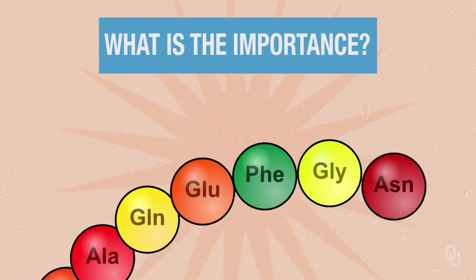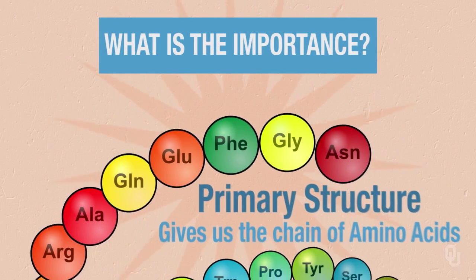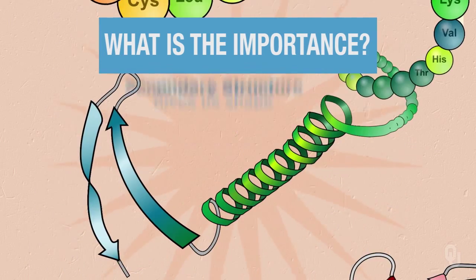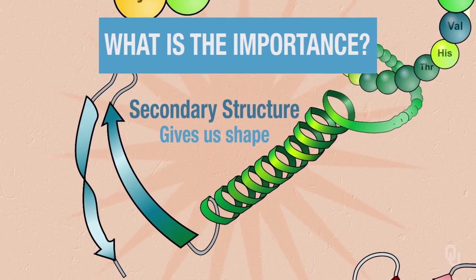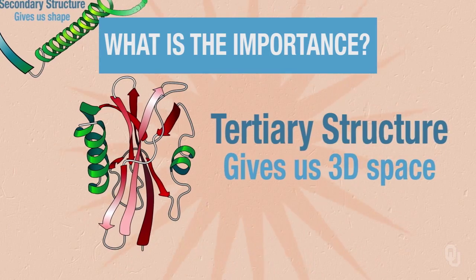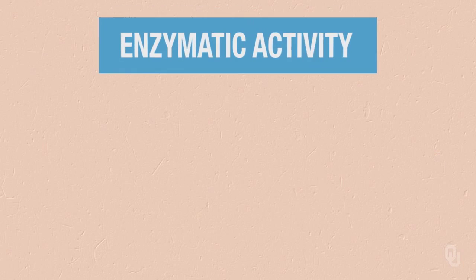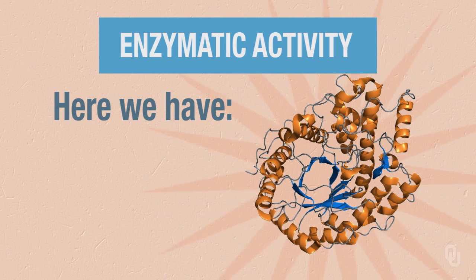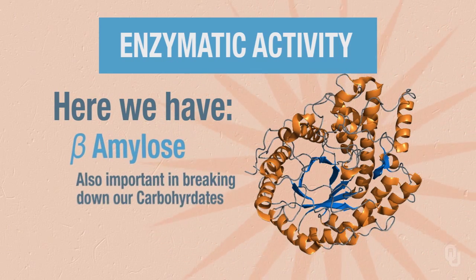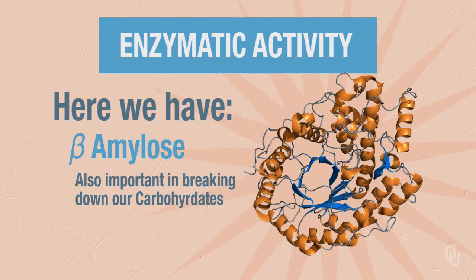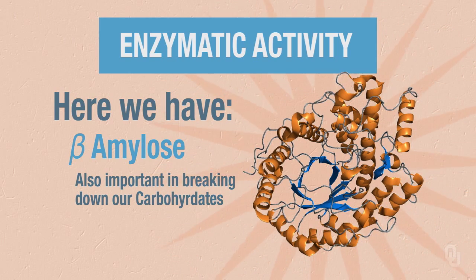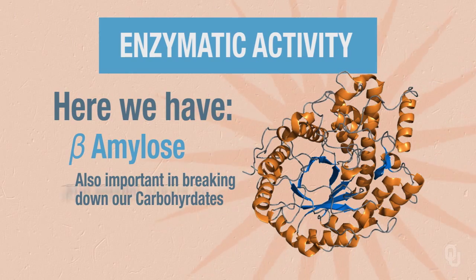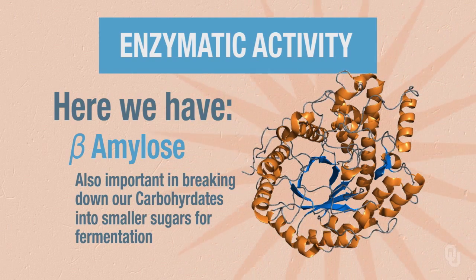What are the importance of these structures? The primary structure just gives us the chain. Secondary structure, we start to see some of the shape, and then in the tertiary structure, that's where we start to get our three-dimensional shape. This three-dimensional shape is essential in our enzyme. Here we have the structure of beta amylase — another enzyme that's going to be important in breaking down our carbohydrates to the smaller sugars that we'll be able to ferment with yeast.